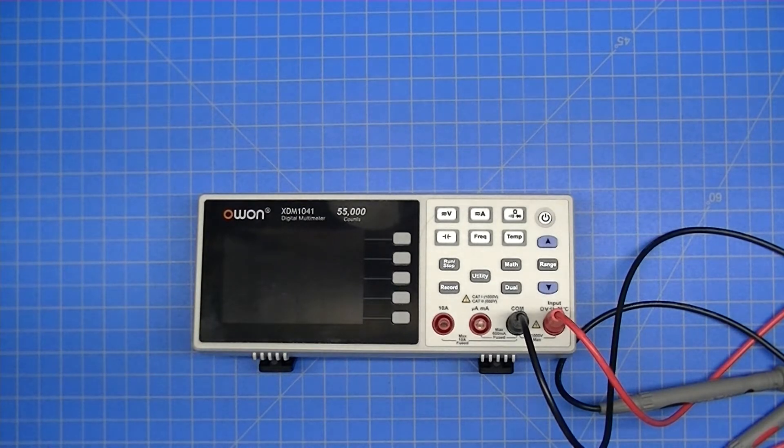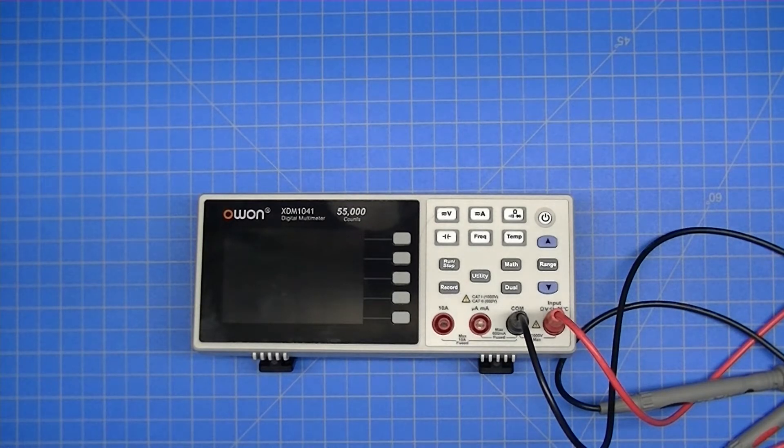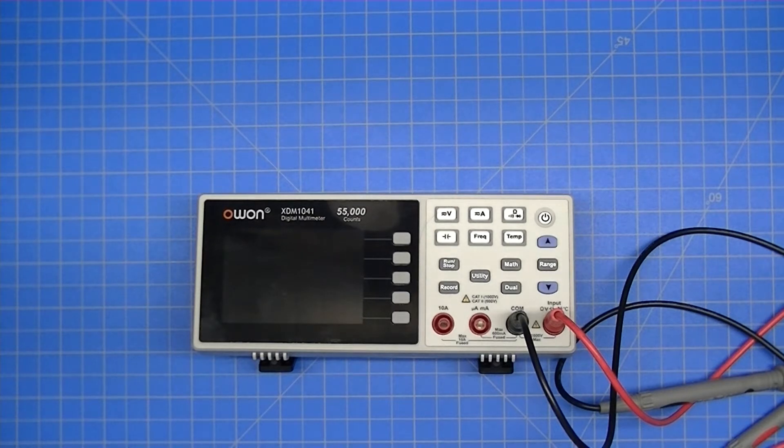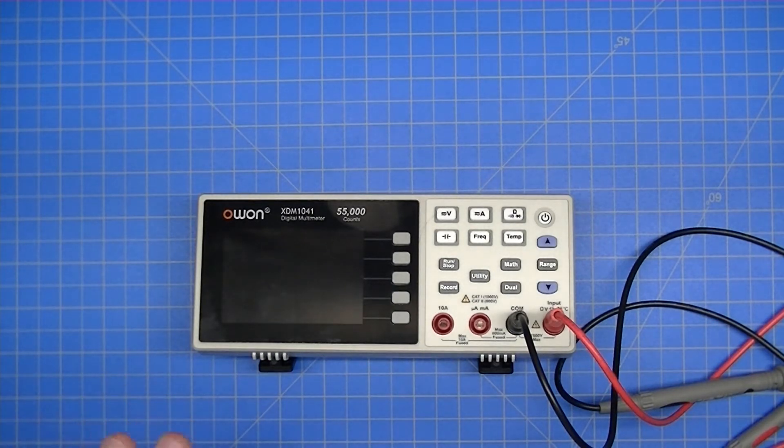So this is a series of multimeters that OWON produces. This particular one has AC and DC voltage measurements. It does microamp and milliamp current measurement, and it also does AC current measurement up to 10 amps, which is excellent. It will save your measurements so that you can take some measurements and capture them and save them off. You can go back and review your measurements later, which is pretty cool. This isn't really a review so much as just a quick show and tell of this thing.